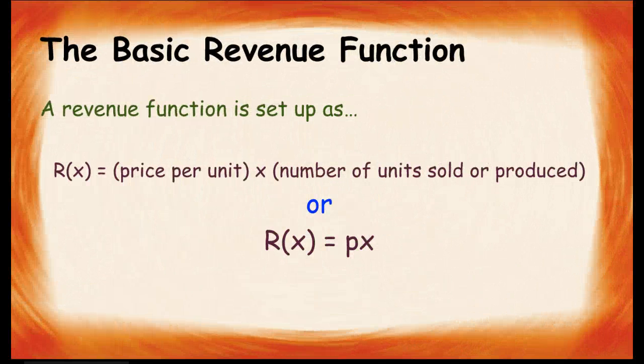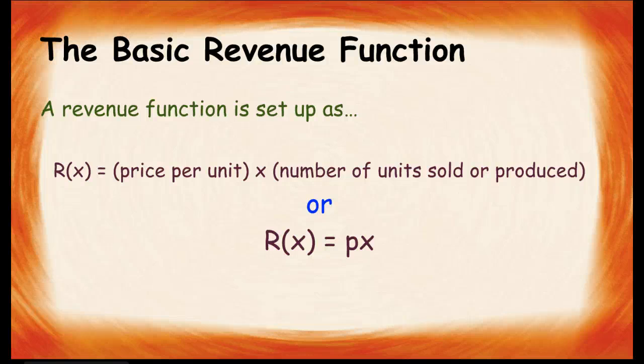Let's look at the basic revenue function. In order to find revenue, we know that it's really just price per unit times the number of units sold or produced. So we have this equation: Revenue equals P, which stands for price, times the units produced. That's a very simple example of the revenue function. It's very basic.